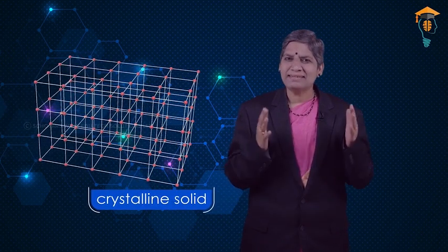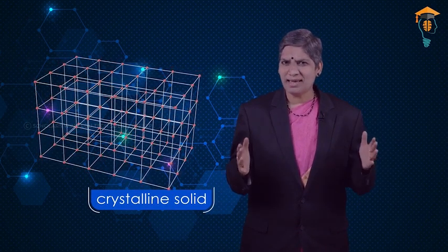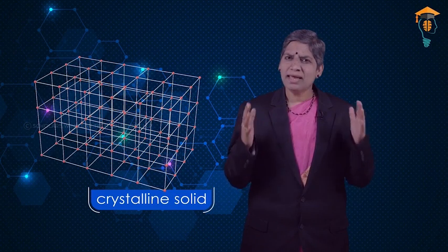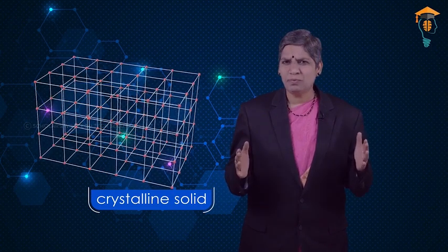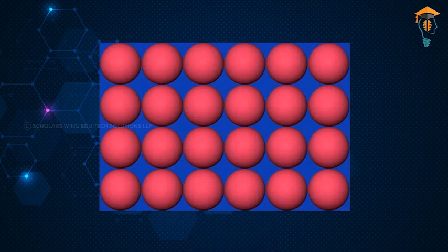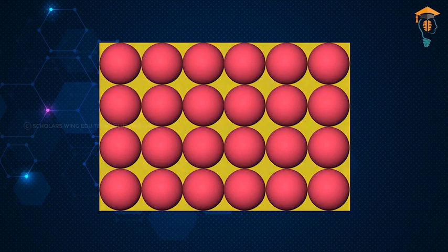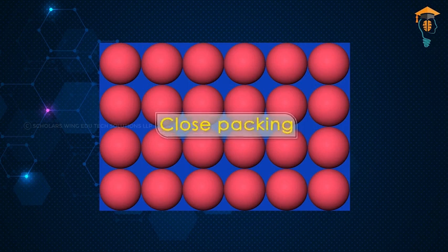We all know that a crystalline solid is made up of a large number of constituent particles. Now let us see how these particles are actually packed in a crystal. In order to understand the packing of these particles, let us assume these particles to be hard spheres of the same size. The packing of particles will be more efficient only when the particles occupy the maximum space available, and if at all there is any empty space left out, it should be very less. Then only the crystal will have maximum density. Such a packing is actually called close packing.